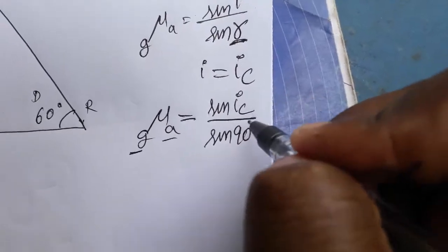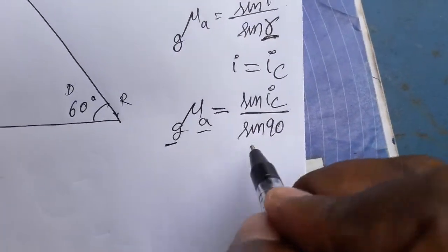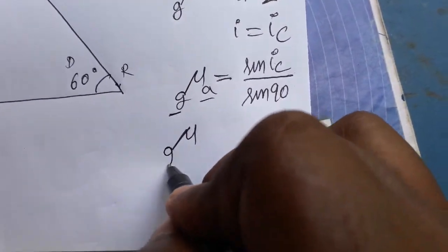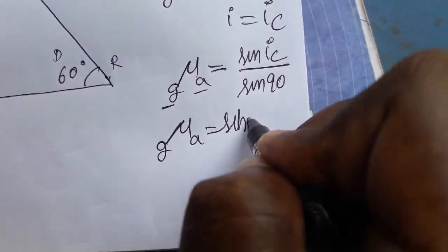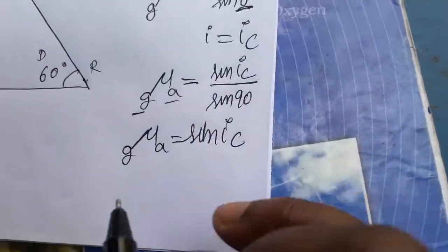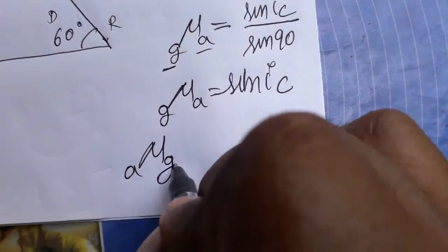Sin 90 will be 1, so μ of G to A equals sin IC. Now, it is not absolute refractive index. Absolute refractive index μ A to G is always rarer medium to denser medium.